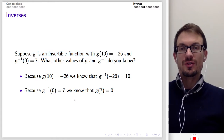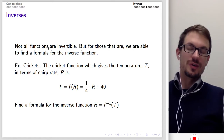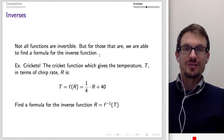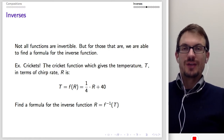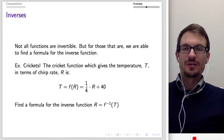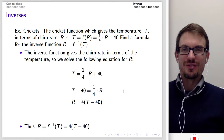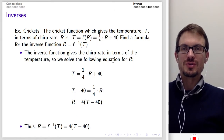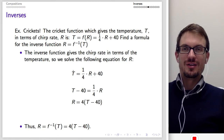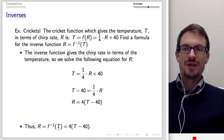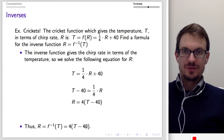Not all functions are invertible, but for those that are, we can find a formula for the inverse. Back to crickets: T equals F of R equals one-fourth R plus 40. To find the inverse function R equals F inverse of T, we simply solve the equation for R. Starting from T equals one-fourth R plus 40, solving gives R equals F inverse of T equals 4 times the quantity T minus 40. The inverse gives the chirp rate in terms of the temperature.